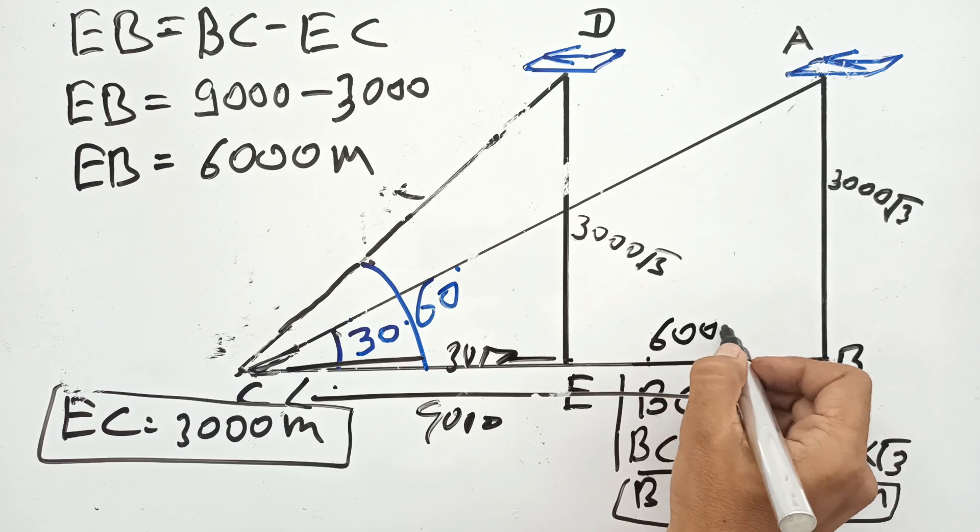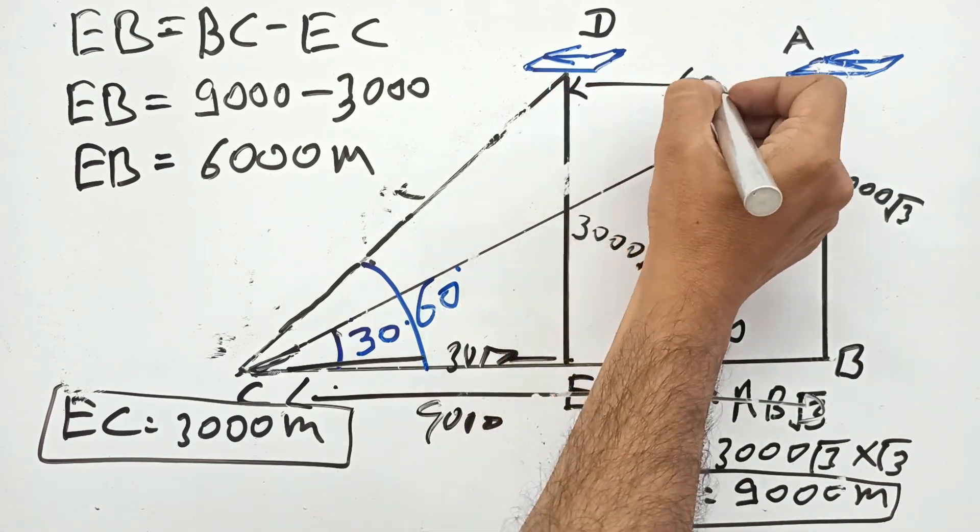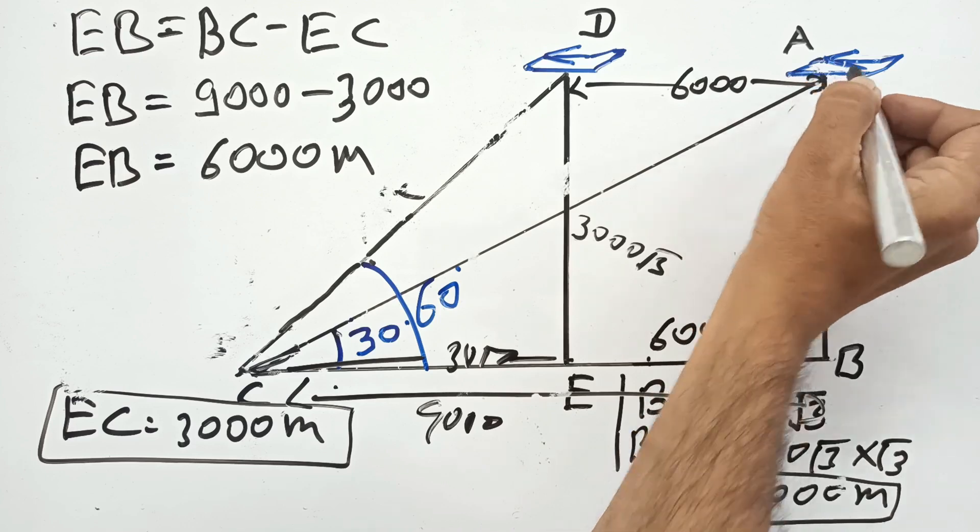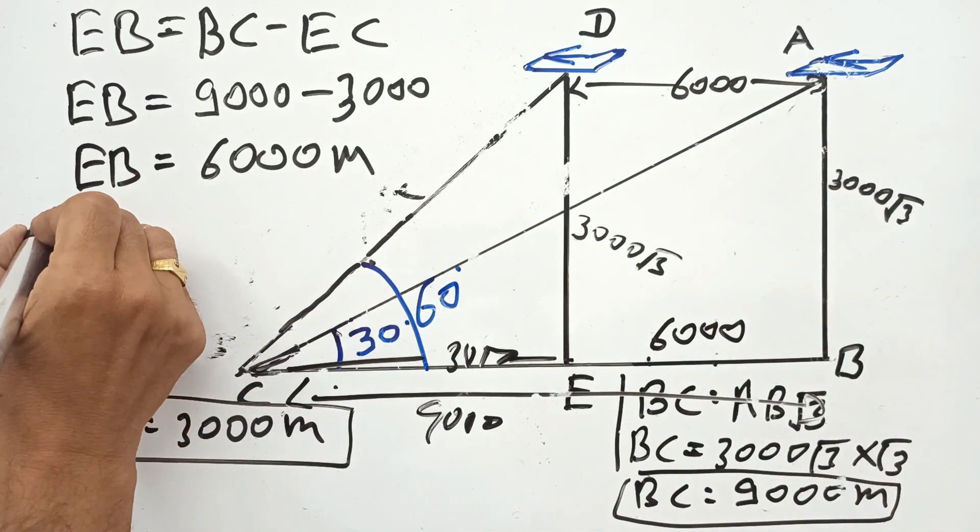This distance is 9000 and this is 3000. This is also 6000 because of this rectangular diagram. Now we will use our formula from physics: time equals distance upon speed.